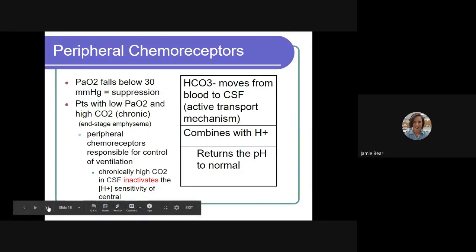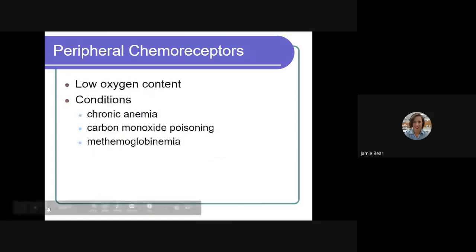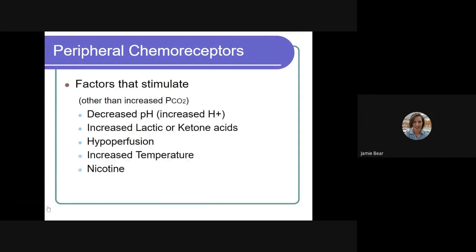The peripheral chemoreceptors are mainly utilized by patients with chronic disease such as COPD. So low oxygen content conditions can be chronic anemia, carbon monoxide poisoning, and methemoglobinemia levels. So they will also be altered due to those conditions as well.